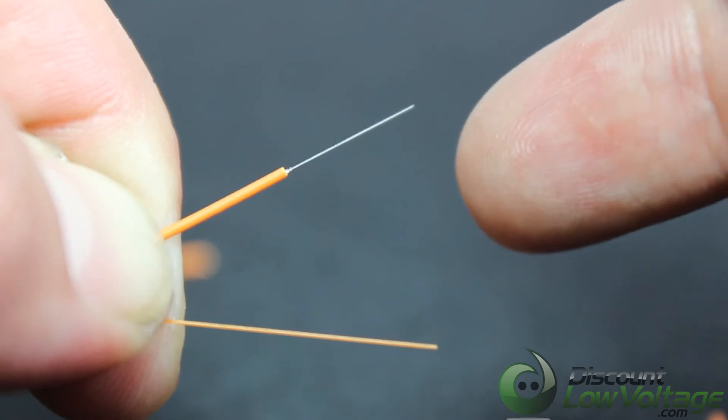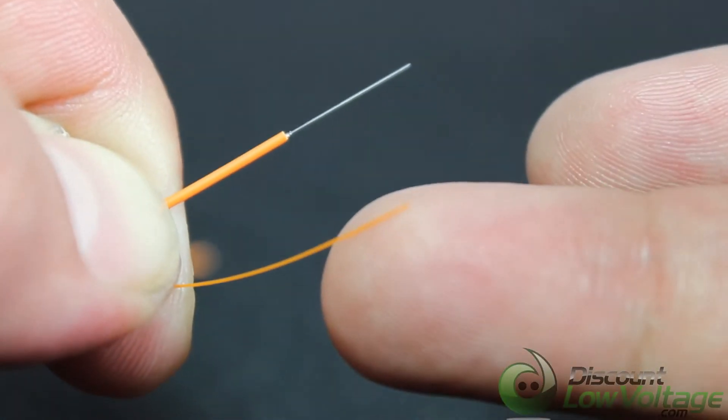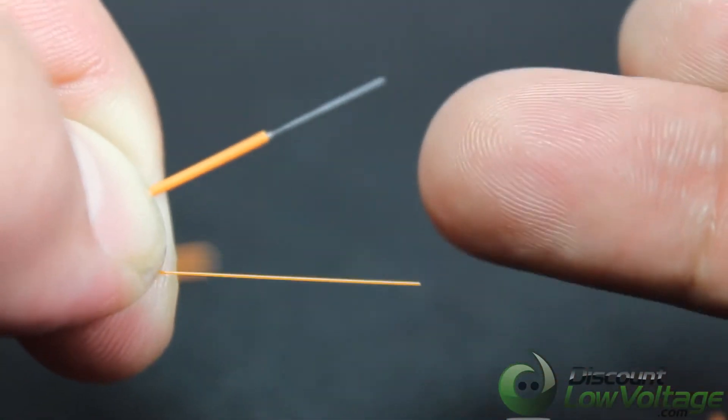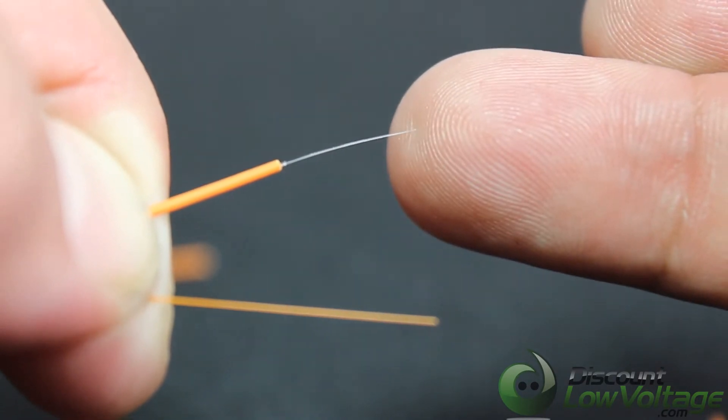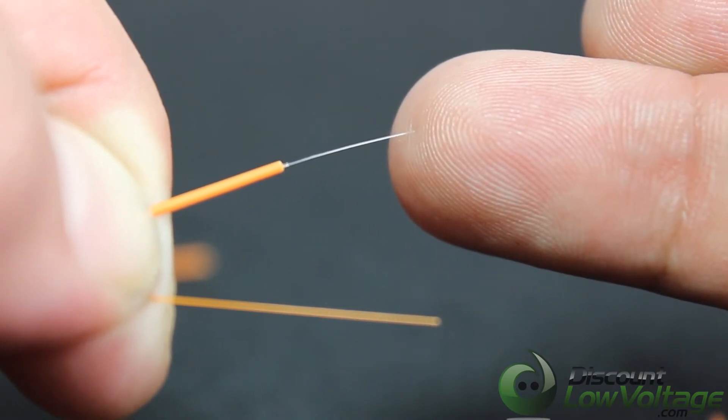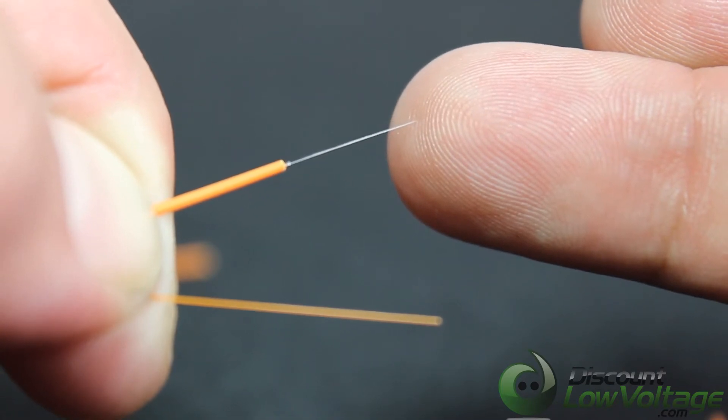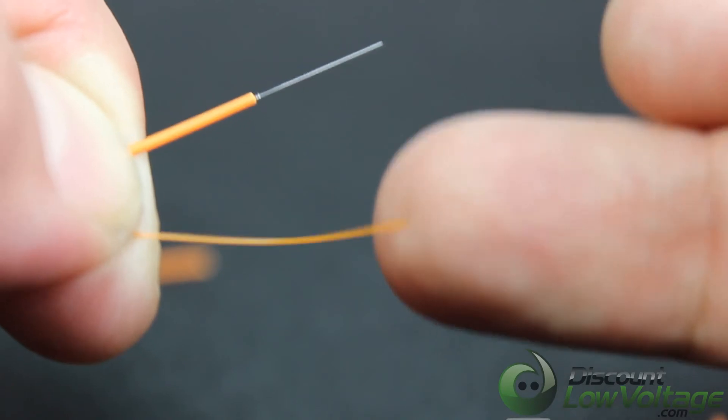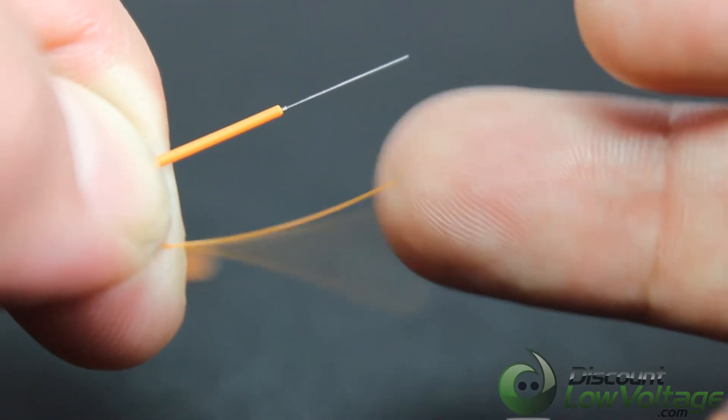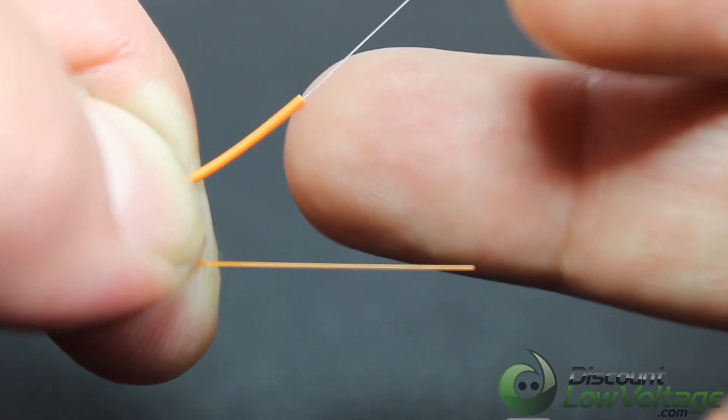Keep in mind, these are both multi-mode 62.5 strands, so the core is going to be 62.5, the cladding is 125, and the outside buffer for loose tube you have 250, for the tight buffer you have 900.